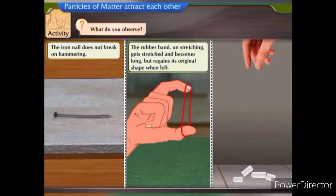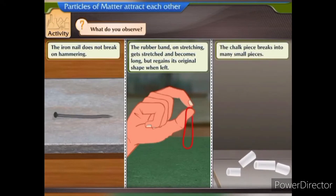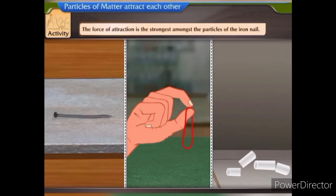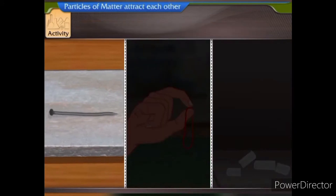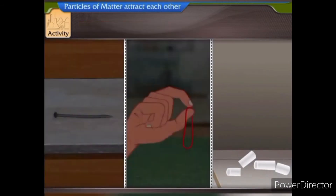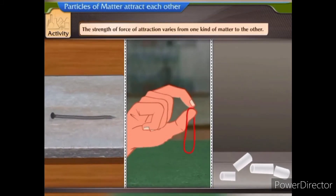The rubber band on stretching gets stretched and becomes long, but regains its original shape when released. The chalk piece breaks into many small pieces. This shows that the force of attraction is the strongest among the particles of the iron nail, and the weakest in the chalk piece. We can thus say that the strength of force of attraction varies from one kind of matter to another.